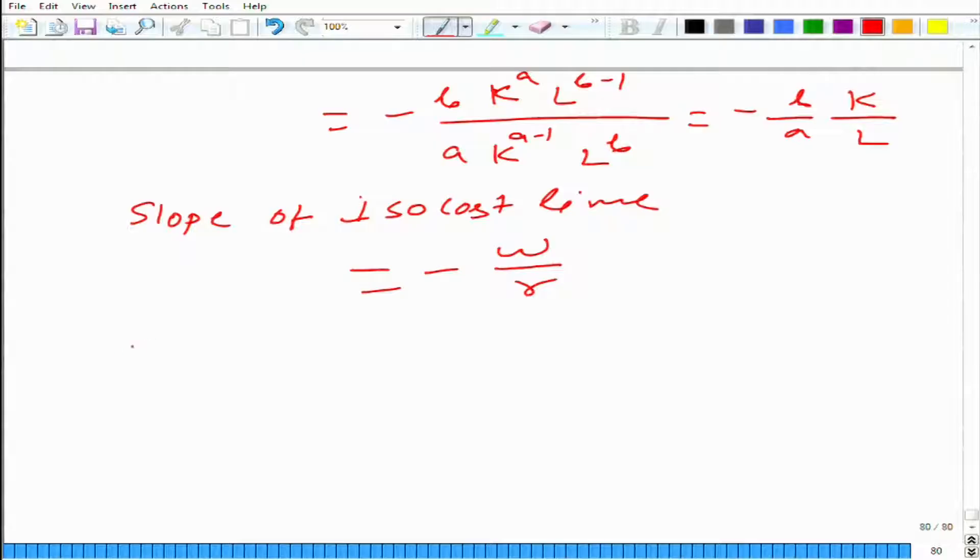What we get basically is that one condition is that b over a times k over l should equal w over r. And what we get is b times k times r equals a times l times w, and this is an equation in two unknowns.